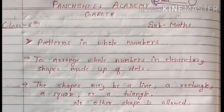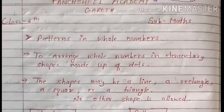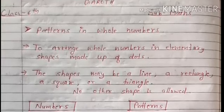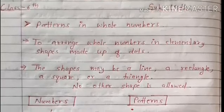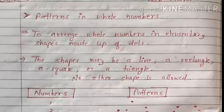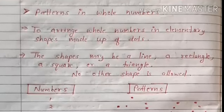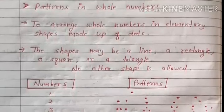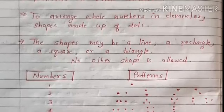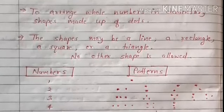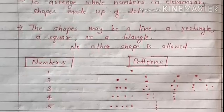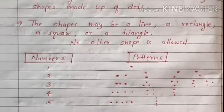Hello my dear students, welcome. Today we cover the last topic of our chapter: patterns in whole numbers. There are some patterns we can make with the help of numbers. Today we are going to learn to arrange whole numbers in elementary shapes made up of dots. These shapes may be a line, rectangle, square, or a triangle — no other shape is allowed. You can see a table in your book with numbers and patterns.